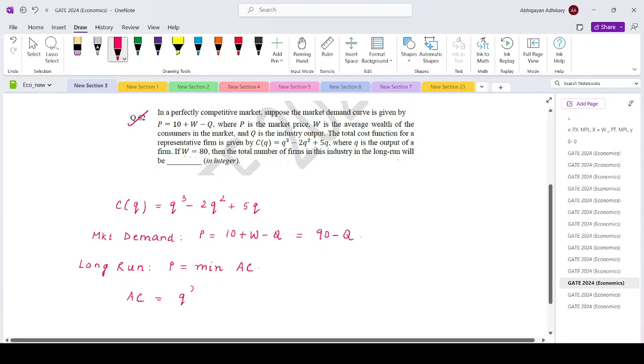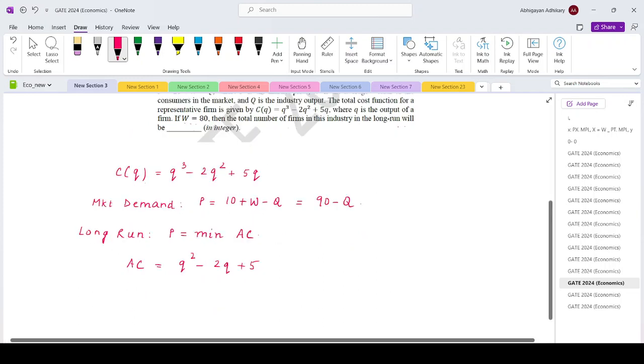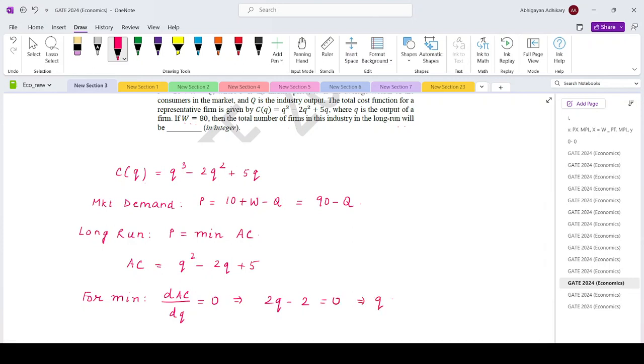The average cost is Q square minus 2Q plus 5. For minimization, what will we do? Differentiate this with respect to Q and set it equals to 0. So that is 2Q minus 2 equals 0.